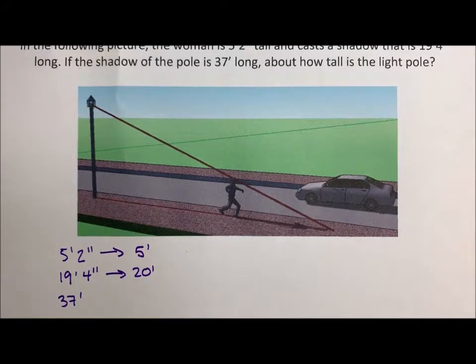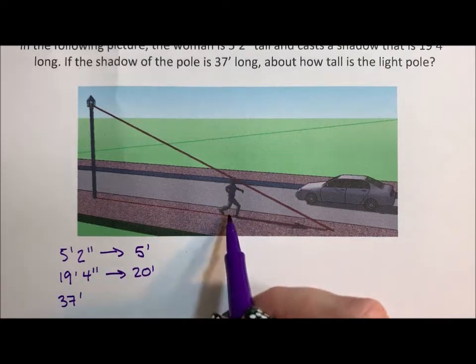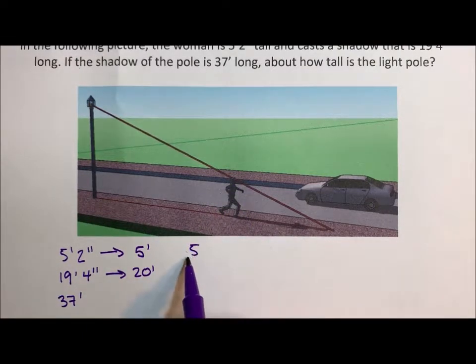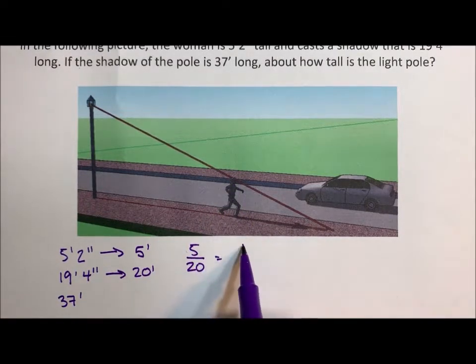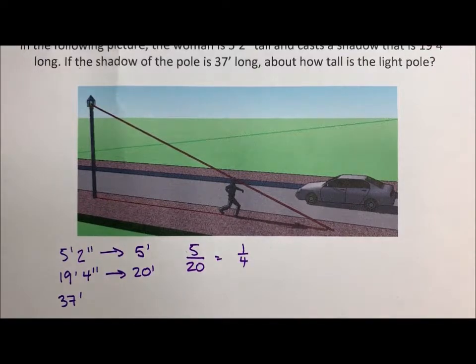So the ratio of height of the woman to her shadow is five to 20, or one to four. The ratio of the height to the shadow is one to four.